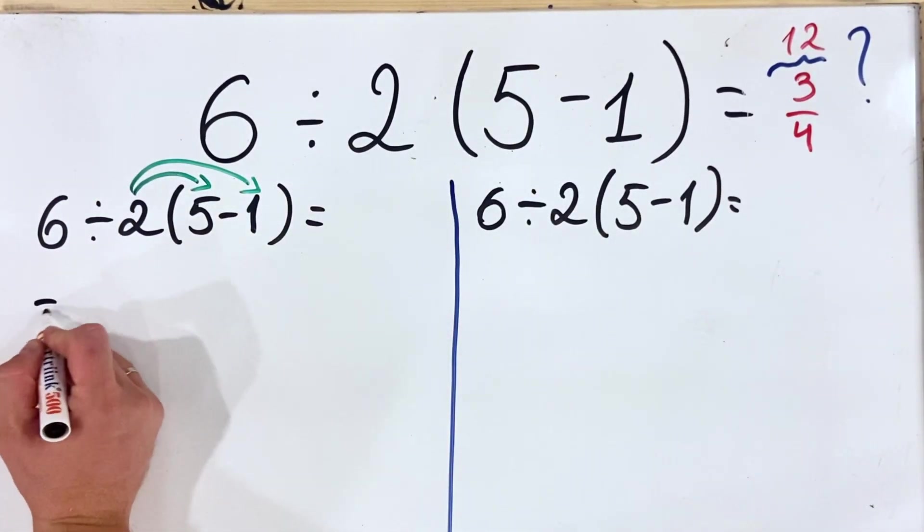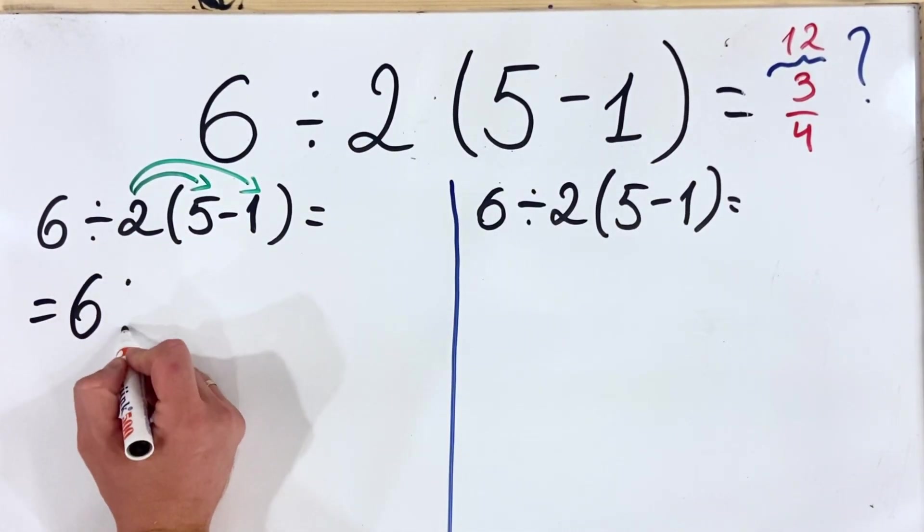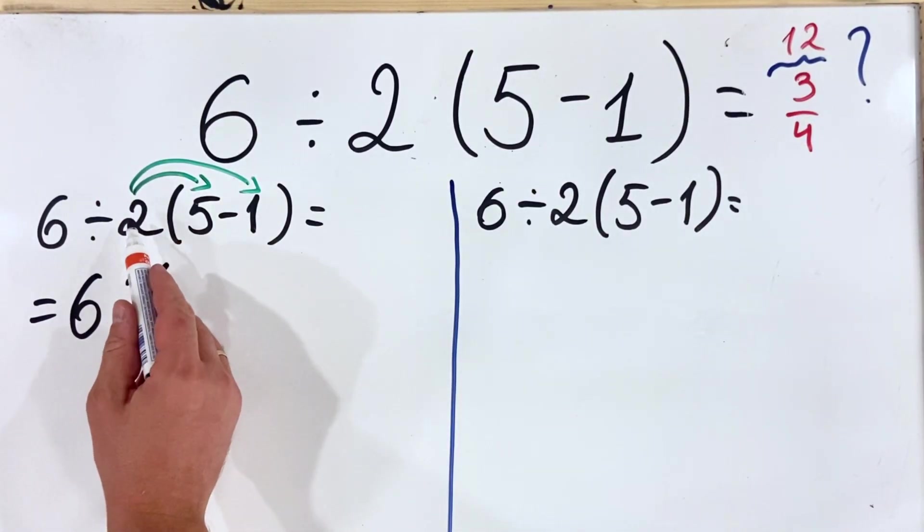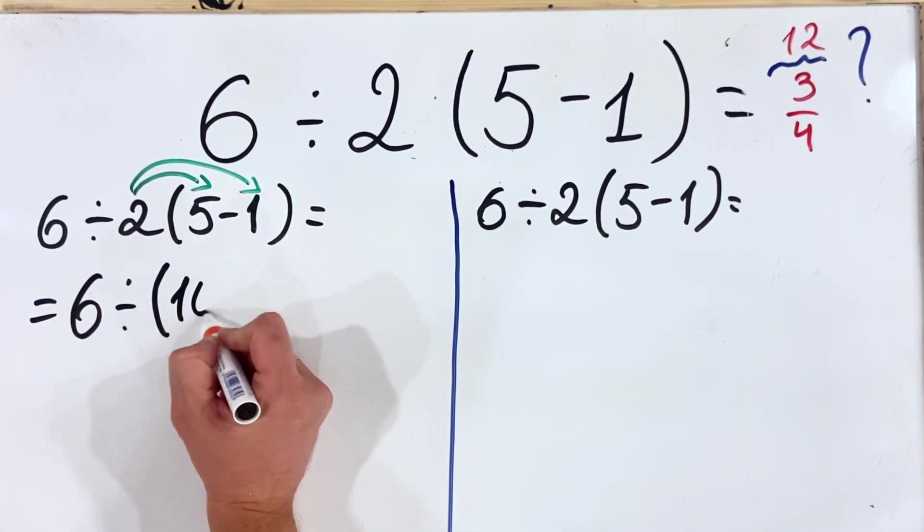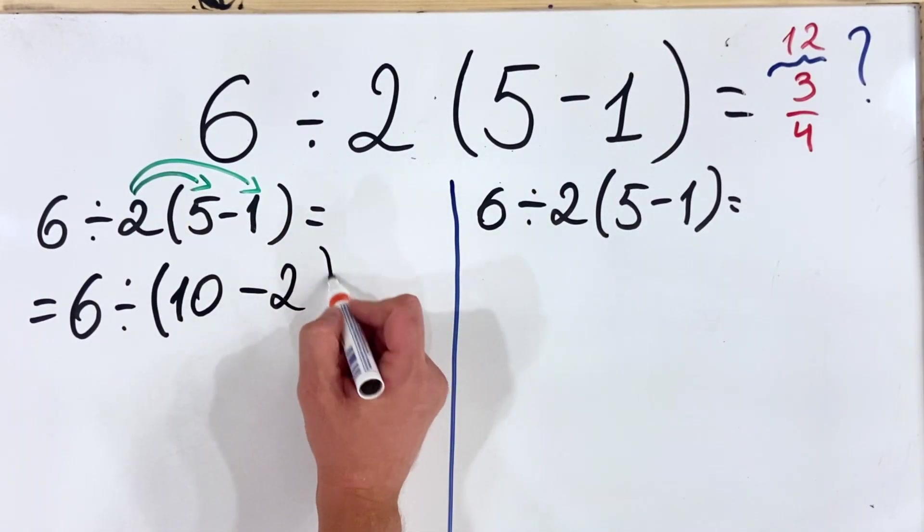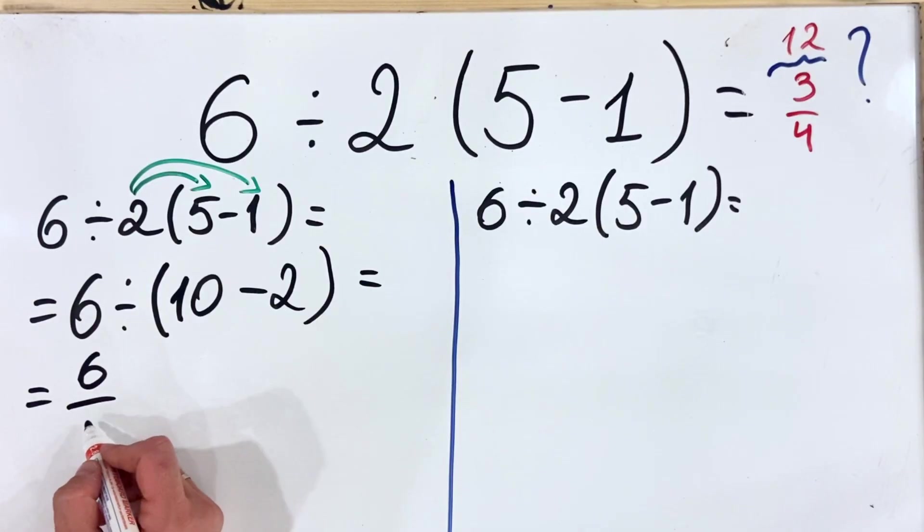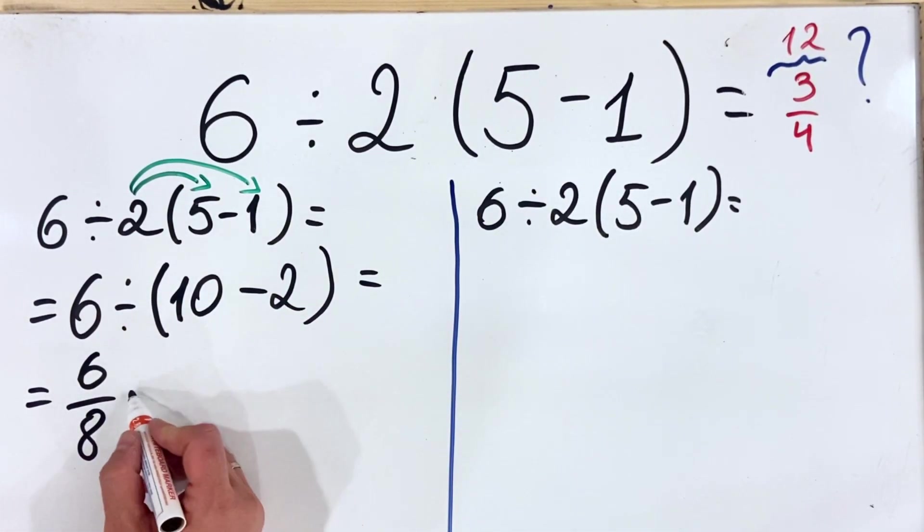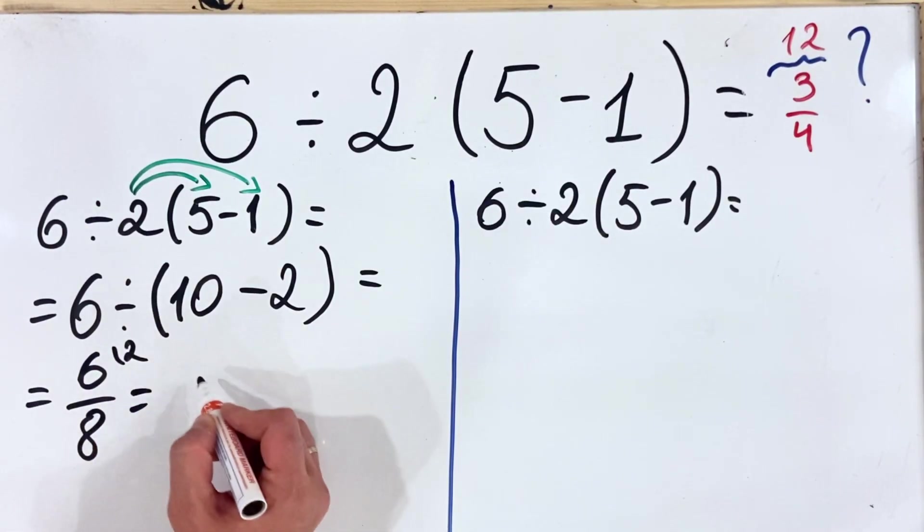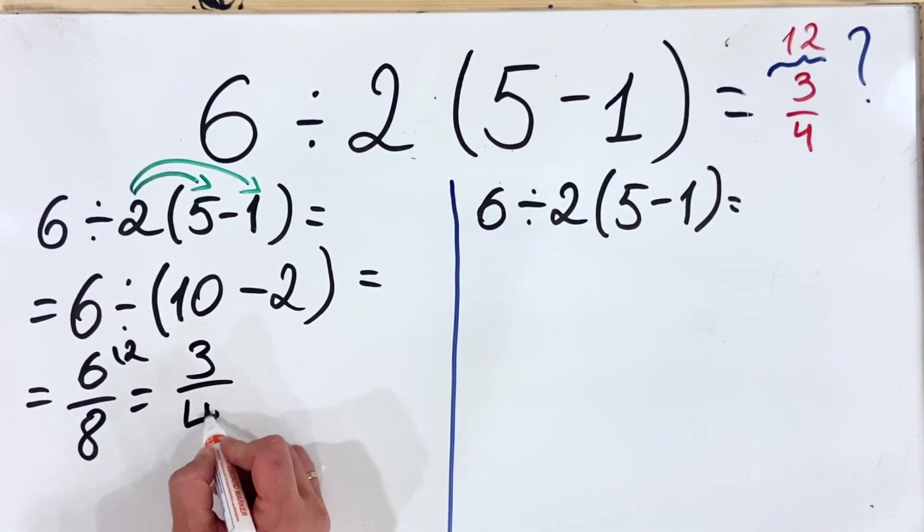So in this case, what we have is 6 divided by 2 multiplied by 5 is 10, minus 2 multiplied by minus 1, minus 2. So we get 6, so 10 minus 2 is 8, so we can write 6 over 8, we simplify by 2, and we have 3/4.